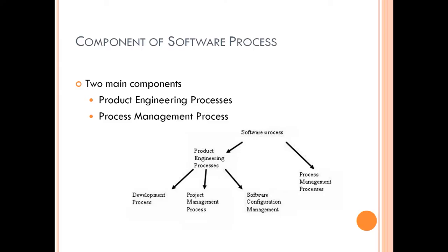The software process is mainly divided into two components. One is called the product engineering process and the other is the process management process. One deals with product engineering and the other mainly deals with process management.